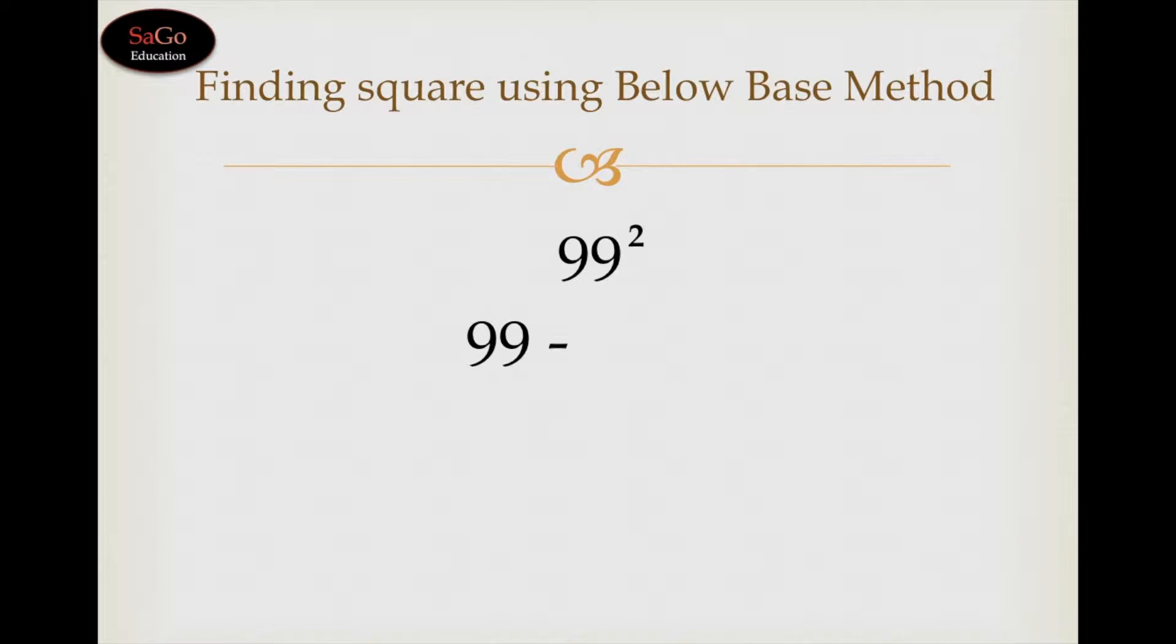Let's take one more sum: 99 squared. 99 subtract 1 because 99 is 1 less than its base 100. Put a slash and we would square 1 only.